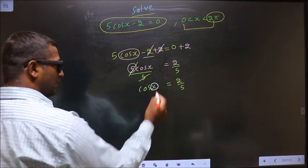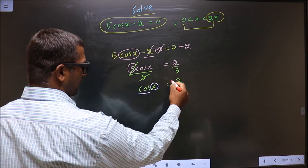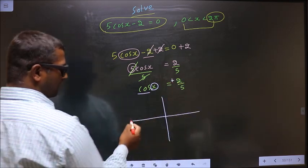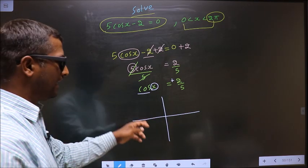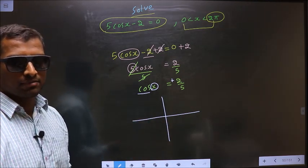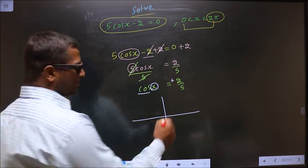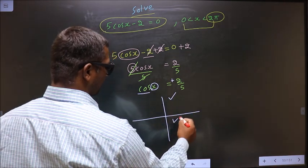Now to get the values for x. Here I have cos and here I have positive. So now you check, in what all quadrants is cos positive? It is all silver tea cups. So cos is positive in the first and in the fourth.